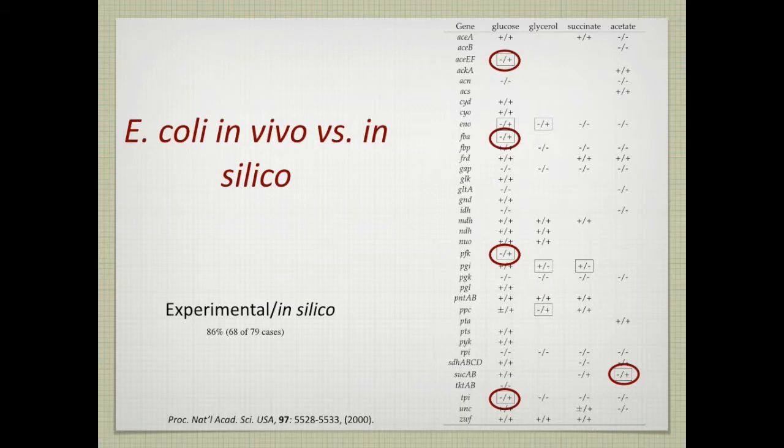But there are failure modes in here, like the ones highlighted in here, where you have a minus slash plus. So experimentally, they don't grow, but computationally, they do grow. So that's an example of a false positive prediction. So there are a few of them in there. And then you're also false negative predictions where the model can't grow, but the cell actually grows. And those are the conditions that are used for gap filling, for instance, because that's indicative that there's something in the cell that is missing in the model because it can actually grow.